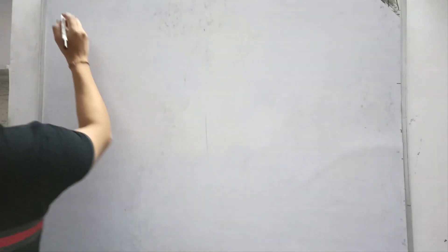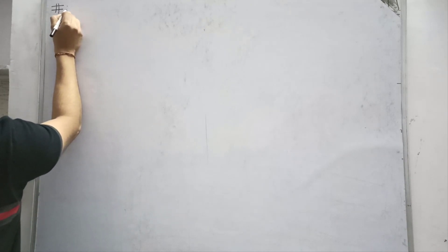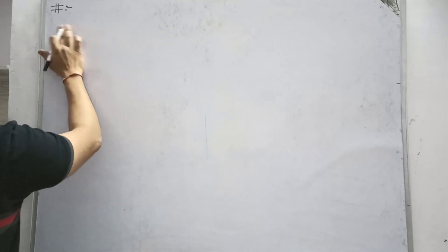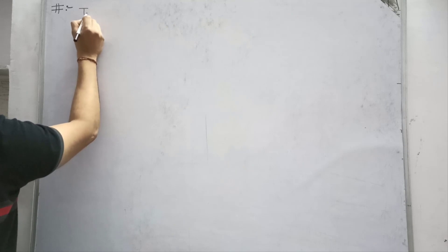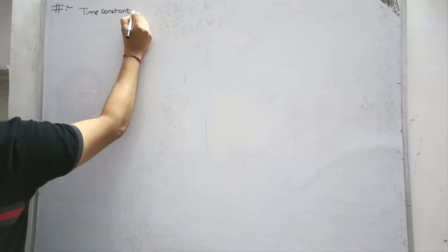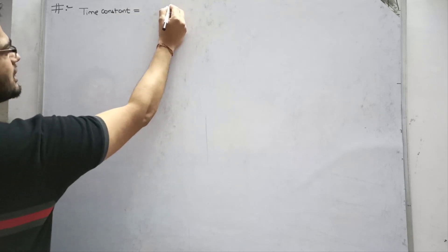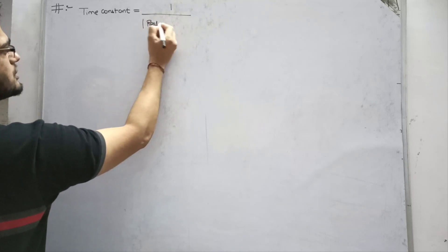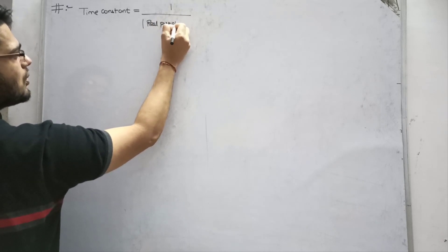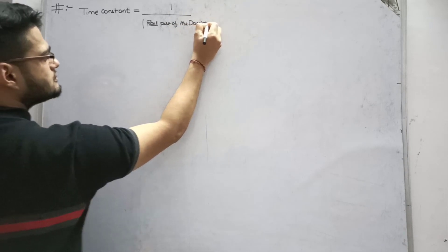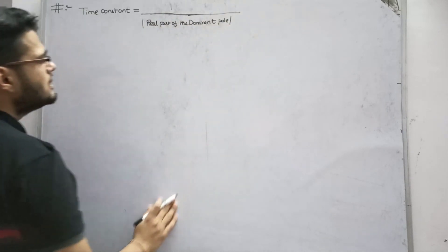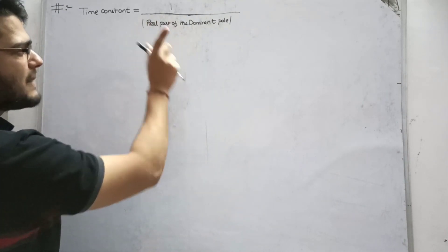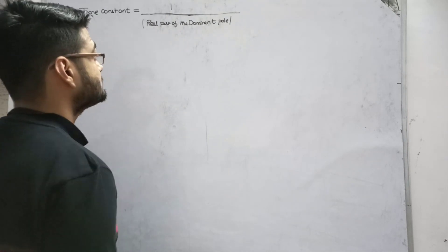Now, the time constant of the network - you will understand what is the time constant of the network. But one simple rule, one simple formula which I am following - it may not always work, it is not a law, but it is a formula which works for most systems. The time constant of any network, any order network, the time constant is 1 upon magnitude of real part of the dominant pole. Whatever order is the system, if you have a dominant pole, if you have multiple poles, if you have a dominant pole, the real part's magnitude - that will be the time constant of the system.